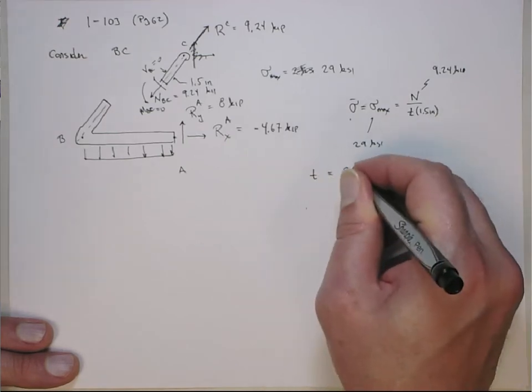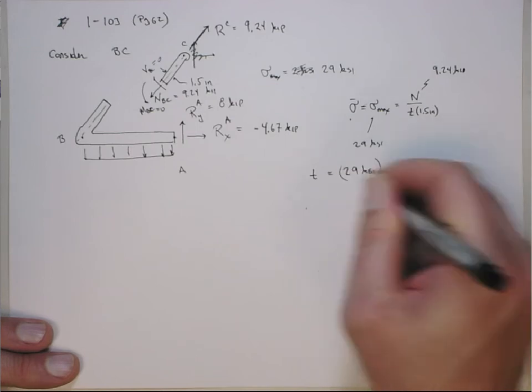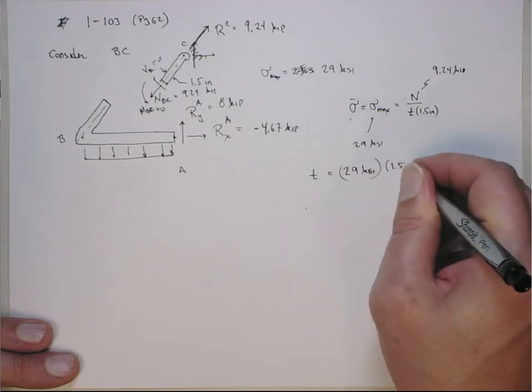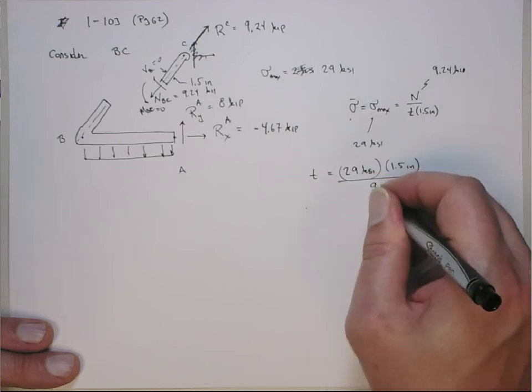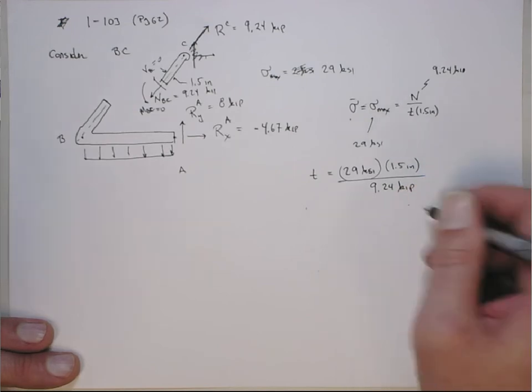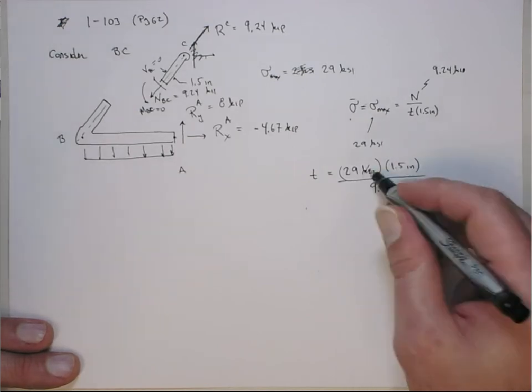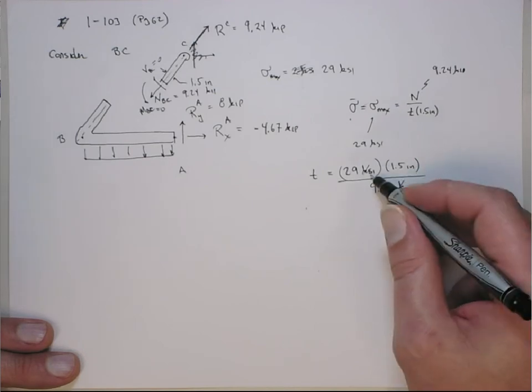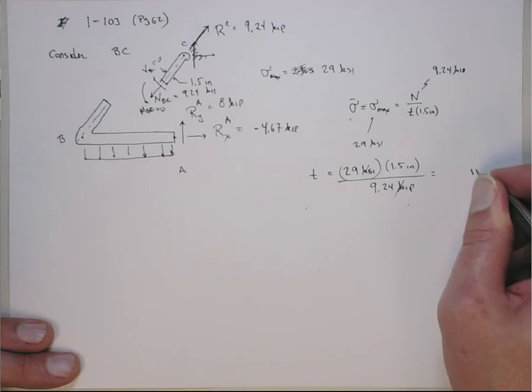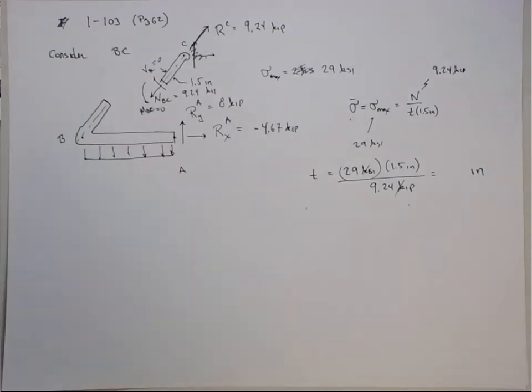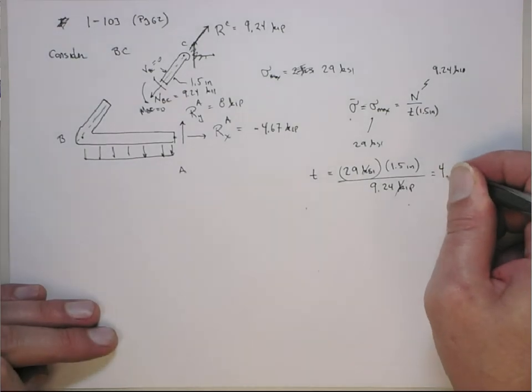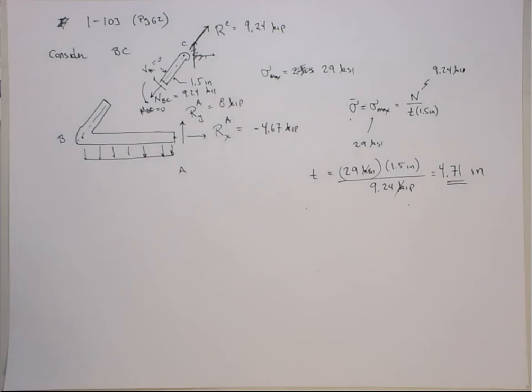T equals 29 ksi times 1.5 inches divided by 9.24 thousand pounds. So the k's cancel out. The pounds cancel with the pounds. The inch here will cancel with the inch squared here. And this will give me units of inches. And then if we just do the math correctly, that gives me 4.71 inches. It seems kind of thick now that I'm thinking about it.